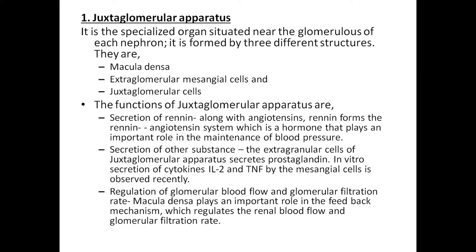First is the juxtaglomerular apparatus. This is a specialized organ situated near the glomerulus of each nephron. It is formed by three different structures: they are macula densa, extraglomerular mesenchymal cells, and extraglomerular cells. The function of the juxtaglomerular apparatus is secretion of renin.